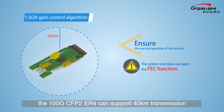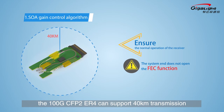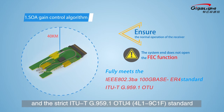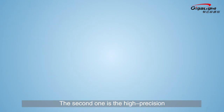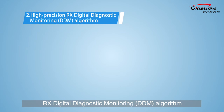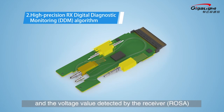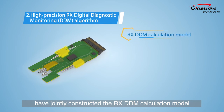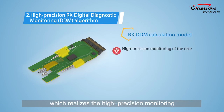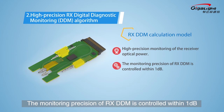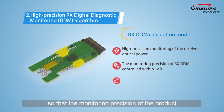This ensures normal operation of the receiver even if the system does not enable the FEC function. The 100G CFP2 ER4 can support 40-kilometer transmission, fully meeting the IEEE 802.3ba 100GBASE-ER4 standard and the ITU-T G.959.1 OTU4 standard. The second algorithm is the high-precision RX digital diagnostic monitoring algorithm. The working current value of the SOA and the voltage value detected by the receiver jointly construct the RX DDM calculation model, realizing high-precision monitoring of receiver optical power with precision controlled within 1 dB.